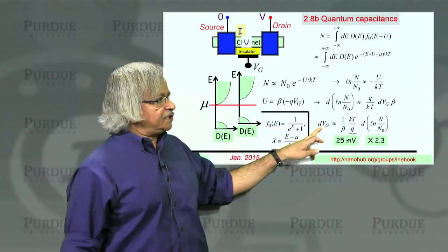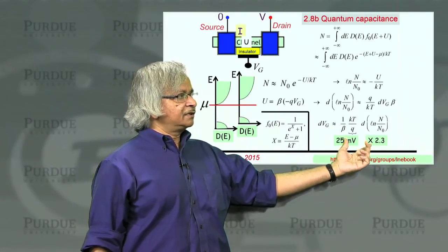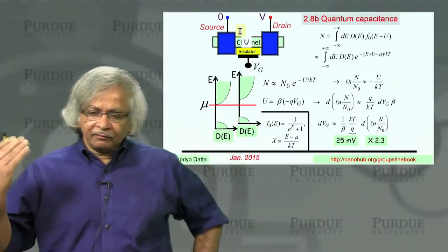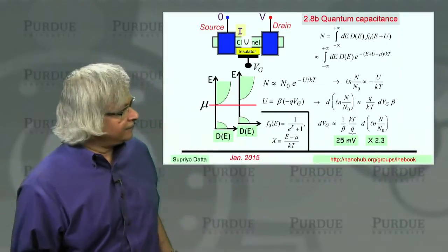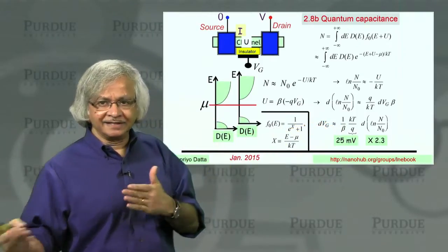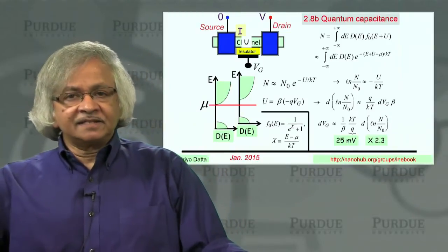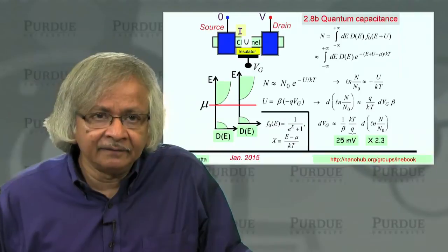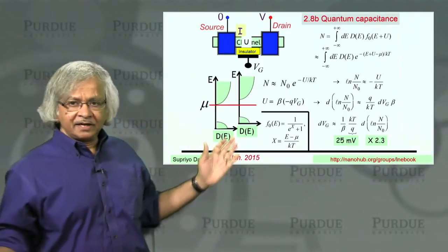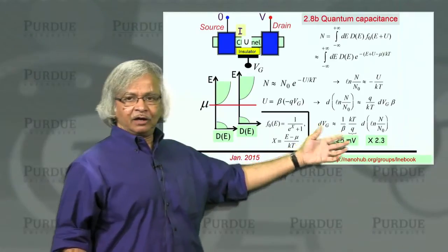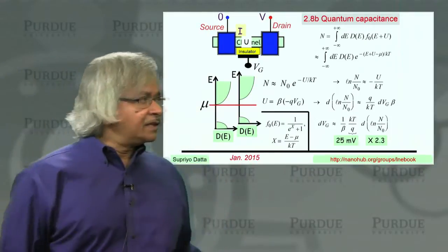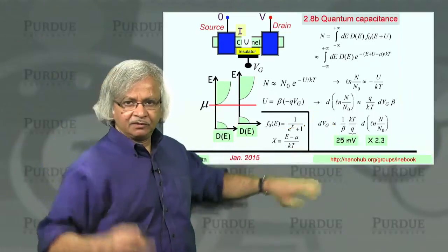The number that all the experts carry in their head is that ideally what you need is 60 millivolts per decade — decade meaning a change by a factor of 10. So 60 millivolts of gate voltage change is needed to change things by a factor of 10. If you were measuring 80 millivolts per decade, people would say you need to work on your beta — maybe it's 0.8, which is why you're not getting 60. On the other hand, if you say you're measuring 40 millivolts per decade, you immediately get everyone's attention, because beta can't be bigger than 1, so 60 is about the best you could expect, or you have discovered something important. That's the criterion everyone carries in their head: 60 millivolts per decade.